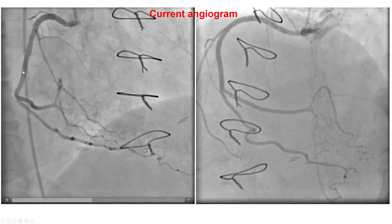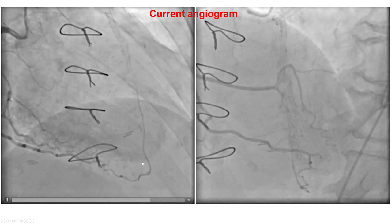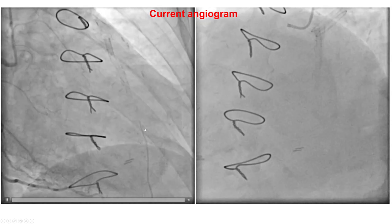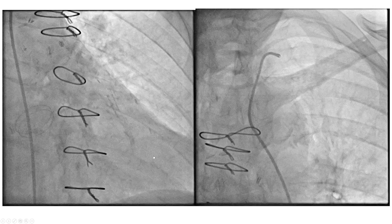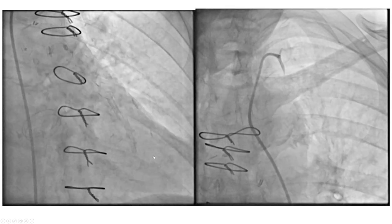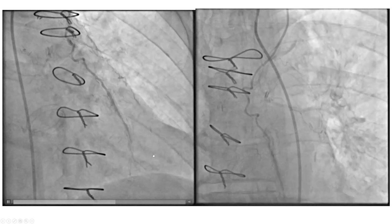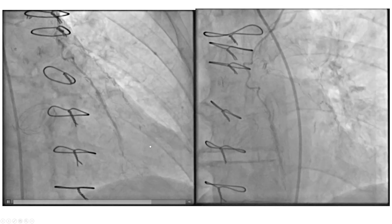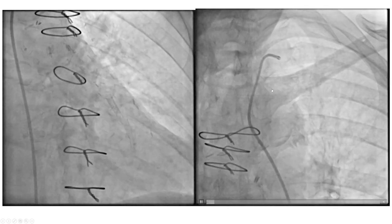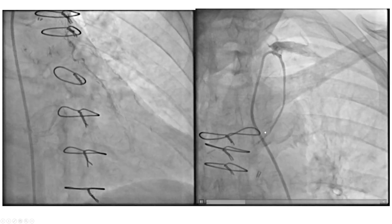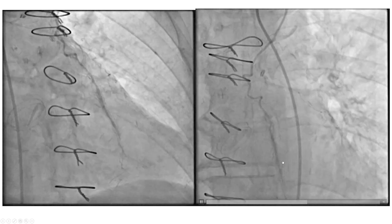At this presentation, the RCA had no significant change and was supplying collateral flow to the distal LAD as before. The vein graft was also patent. However, there was no longer antegrade flow from the Lima into the native coronary vessel.